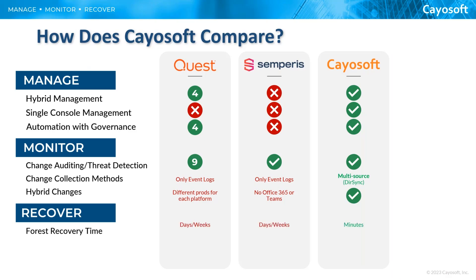Let's talk about recovery. For forest recovery — the big one that takes out your environment — with Quest it'll take maybe half a day to a day, with no guarantee it's going to work because you don't try the recovery until you have an outage. Exactly the same situation with Semperis — could be an hour, could be nine hours, could be a day, could be a week. If your recovery fails, there's no way to know ahead of time. We worked with Gartner on a survey, and it turns out only about 20% of Active Directory owners test as frequently as they should, and some never test at all.